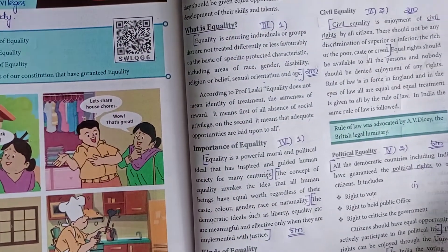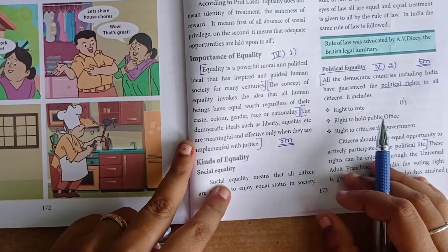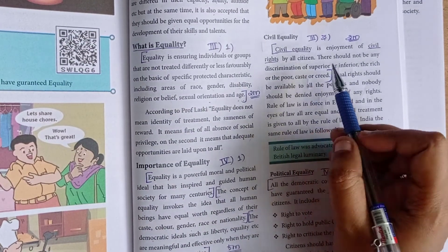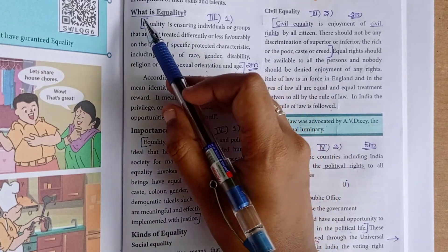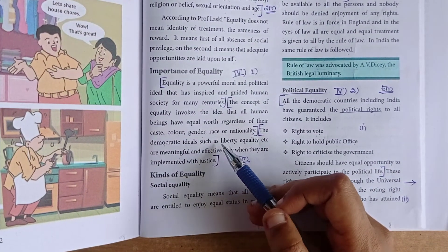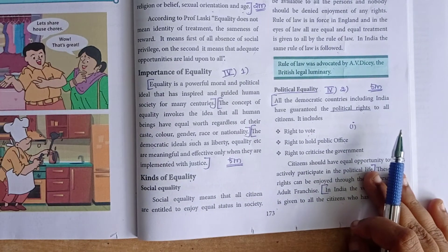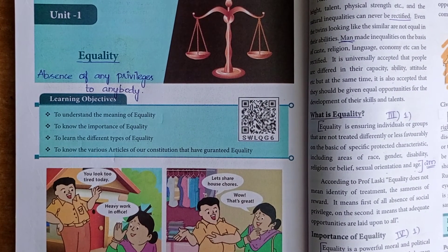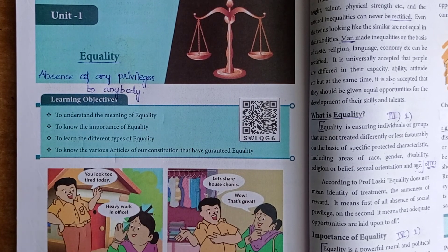Today's homework: you have to write what is equality — the two-mark question; the five-mark question on importance of equality with three points; and civil equality. Get your books and write your answers neatly and clearly. Thank you.